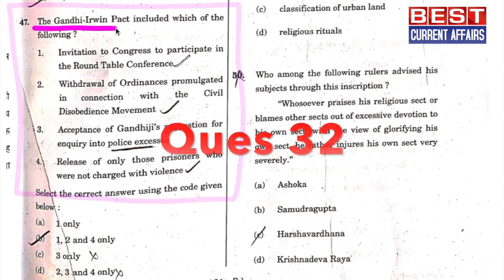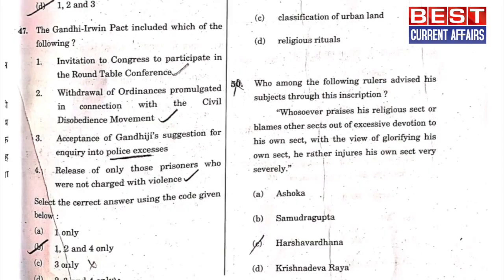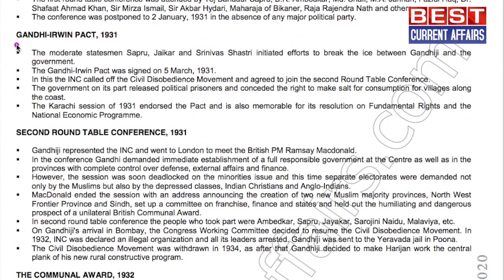The Gandhi-Irwin Pact included which of the following? The first option is an invitation to the Congress to participate in the roundtable conference — this is correct. From our Indian history booklet, page 181: the Indian National Congress called off the civil disobedience movement and agreed to join the second roundtable conference.